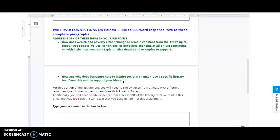how does wealth and poverty either change or remain constant from the 1700s up to today? Are societal values, conditions, or behaviors changing at all or just continuing on with little improvement? Explain. Give details and examples to support.